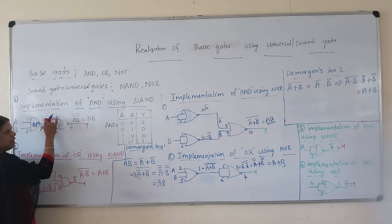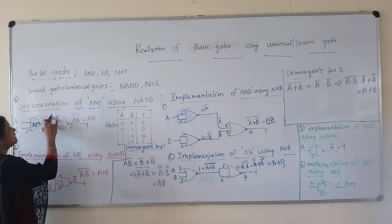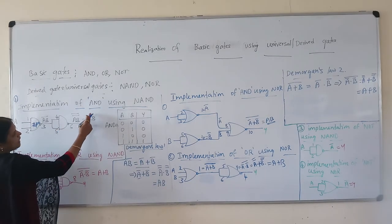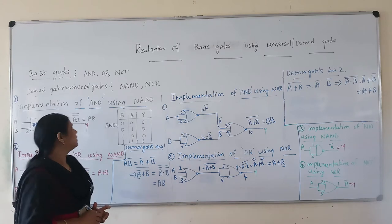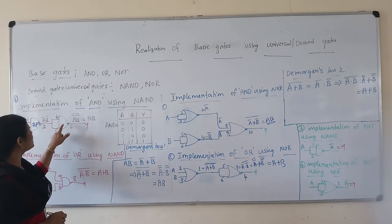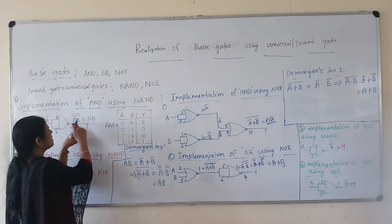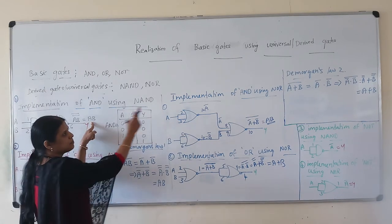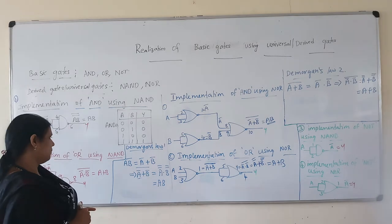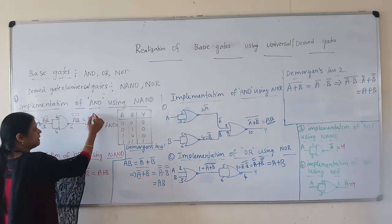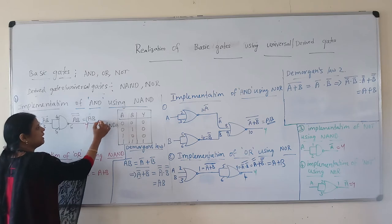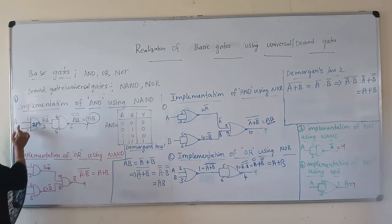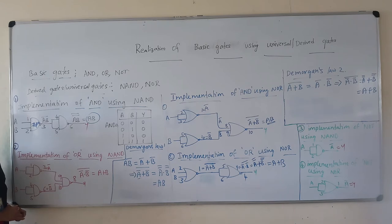Since the output is AB bar, as already discussed, AB bar is equivalent to A bar plus B bar by De Morgan's law. Therefore if I do A bar plus B bar whole bar, we get A double bar dot B double bar, which equals AB. As per De Morgan's law, we are getting AB — the product — as the final output. Therefore this particular circuit represents the AND gate implementation using NAND.